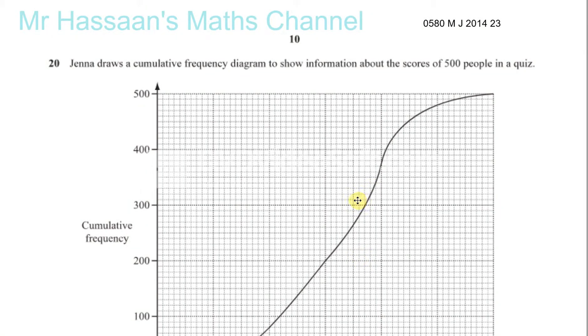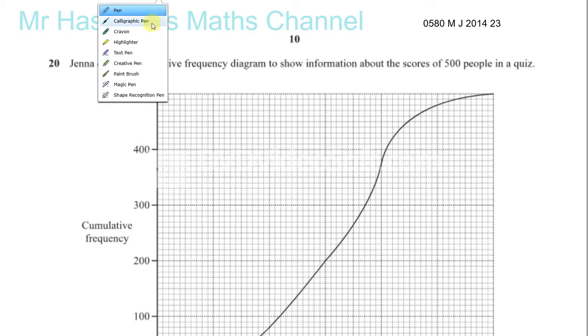Here we have question number 20 from May-June 2014, paper 2, variant 3. This is a question about a cumulative frequency diagram.